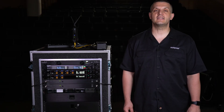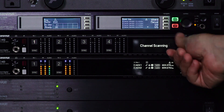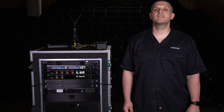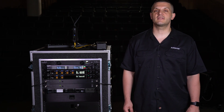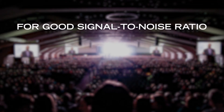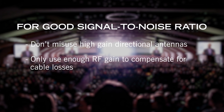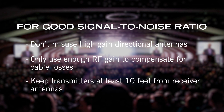Channel scanning is still the best way to find the cleanest channels, just like a standard RF coordination. Here are some tips and best practices to maximize the performance of your system while using High Density Mode. To maintain a favorable signal-to-noise ratio, avoid misusing high gain directional antennas — only use enough RF gain to compensate for cable losses. Keep transmitters at least 10 feet away from receiver antennas at all times.